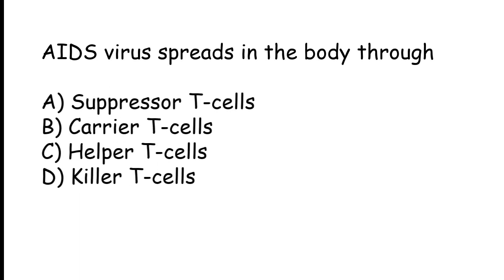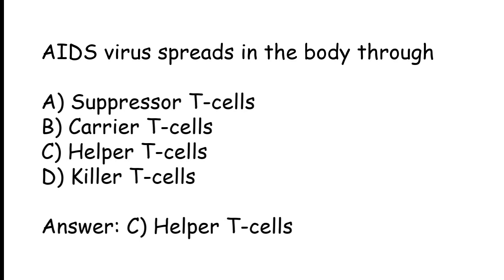AIDS virus spreads in the body through: Suppressor T-cells, Carrier T-cells, Helper T-cells, or Killer T-cells. The correct answer is Option C. AIDS virus spreads in the body through Helper T-cells.